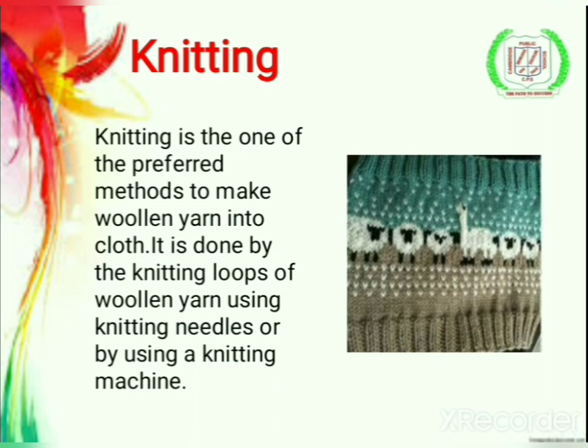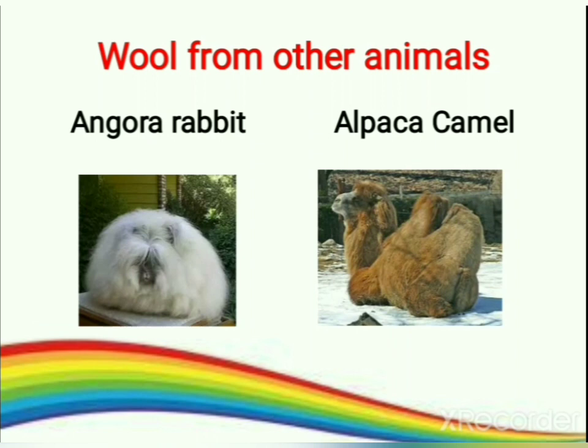Wool is also obtained from other animals, for example the Angora rabbit, which has a lot of hair on its body. Also from alpaca and camel — the camel also has a lot of hair, which is removed and prepared for use.